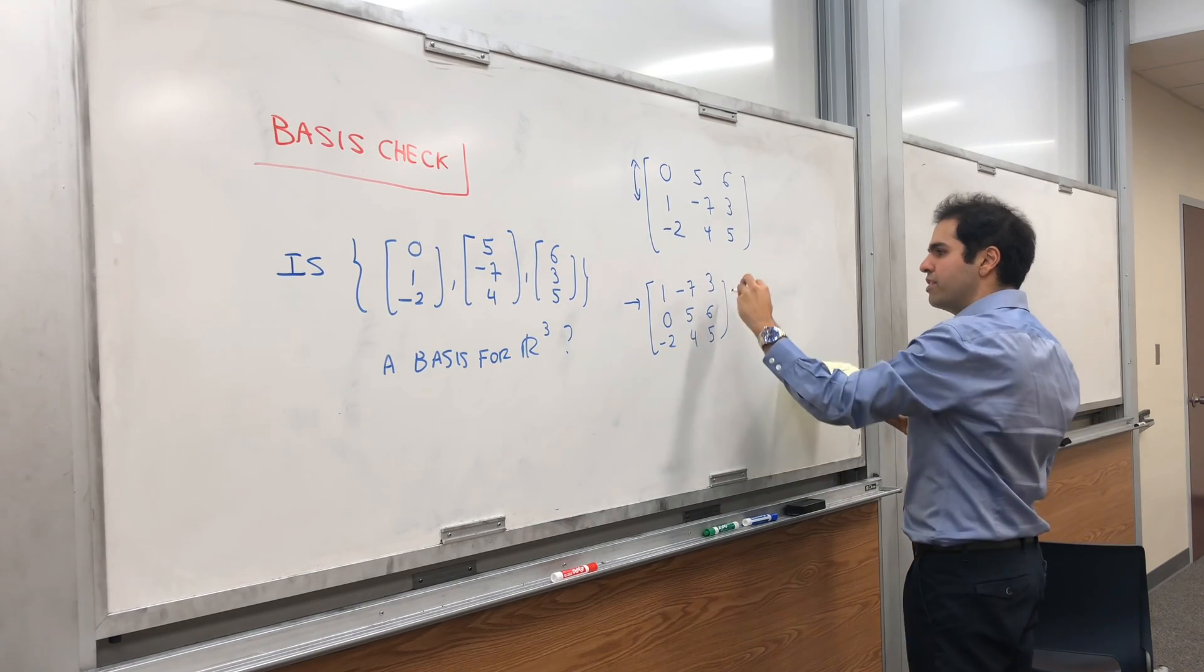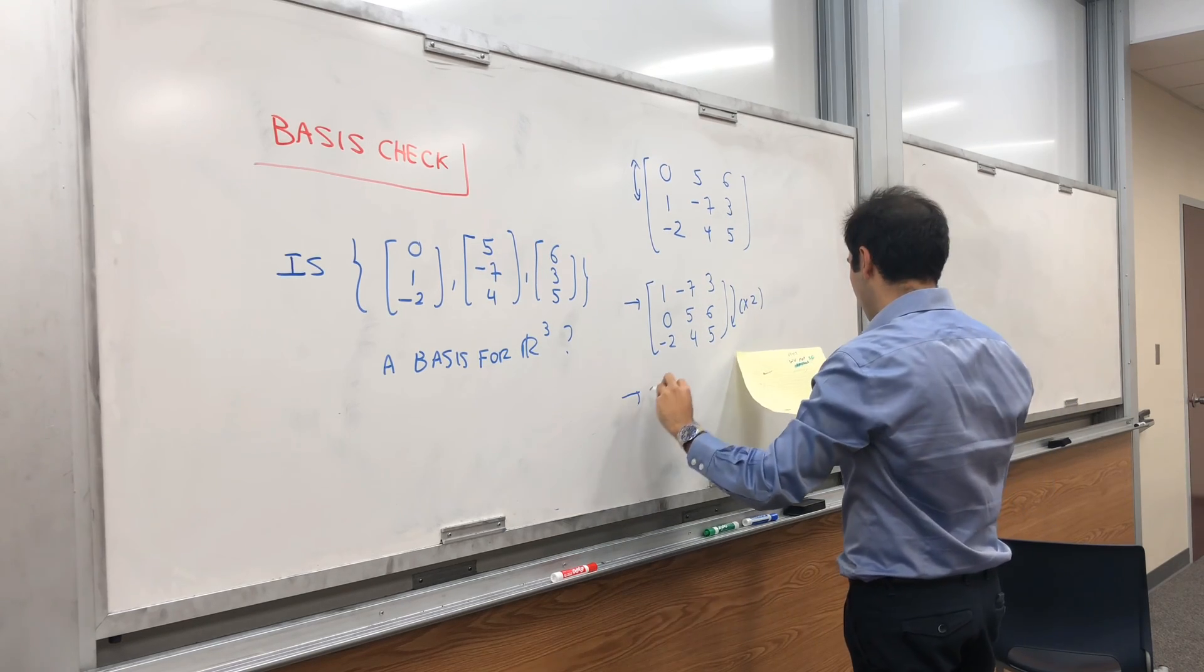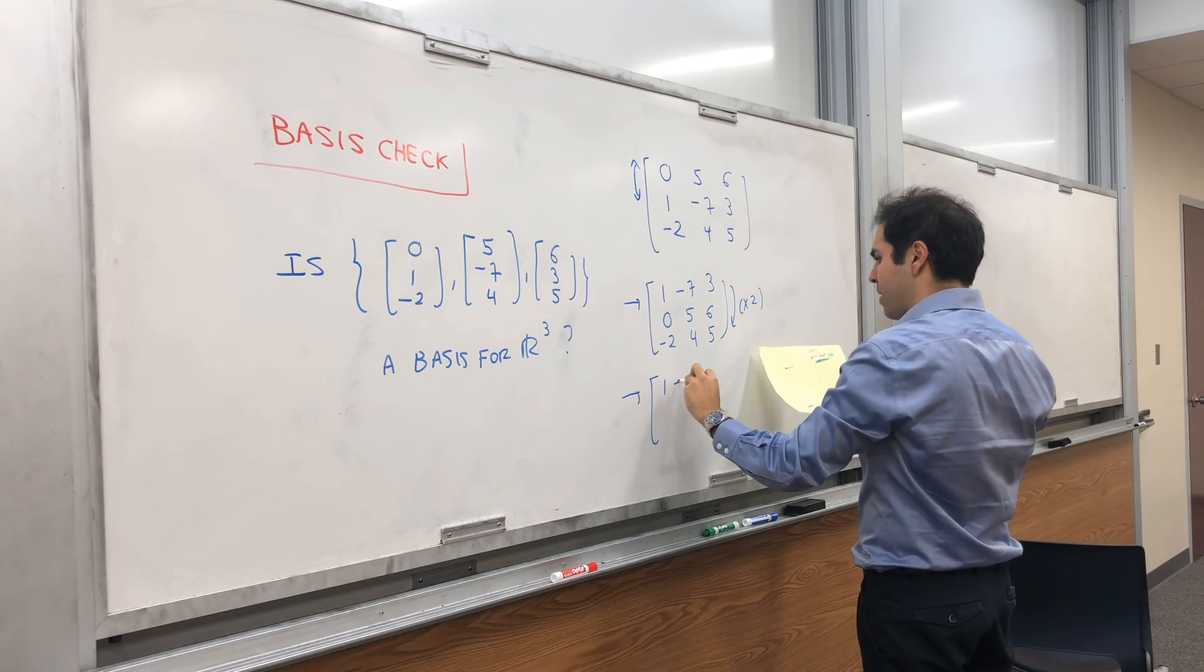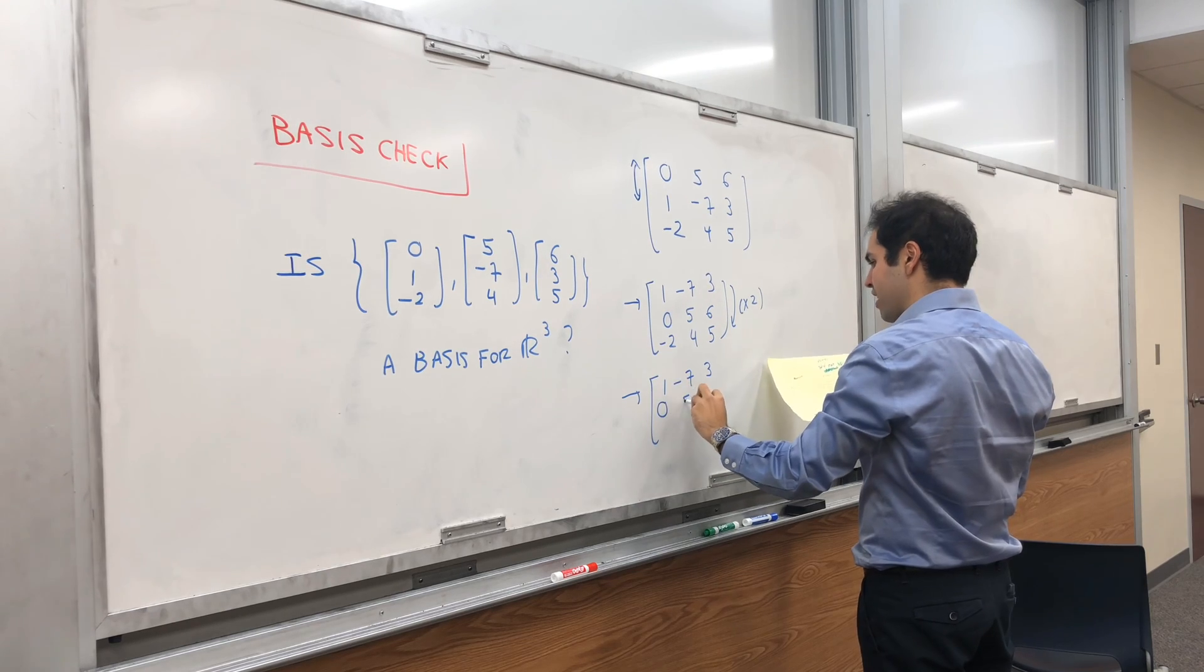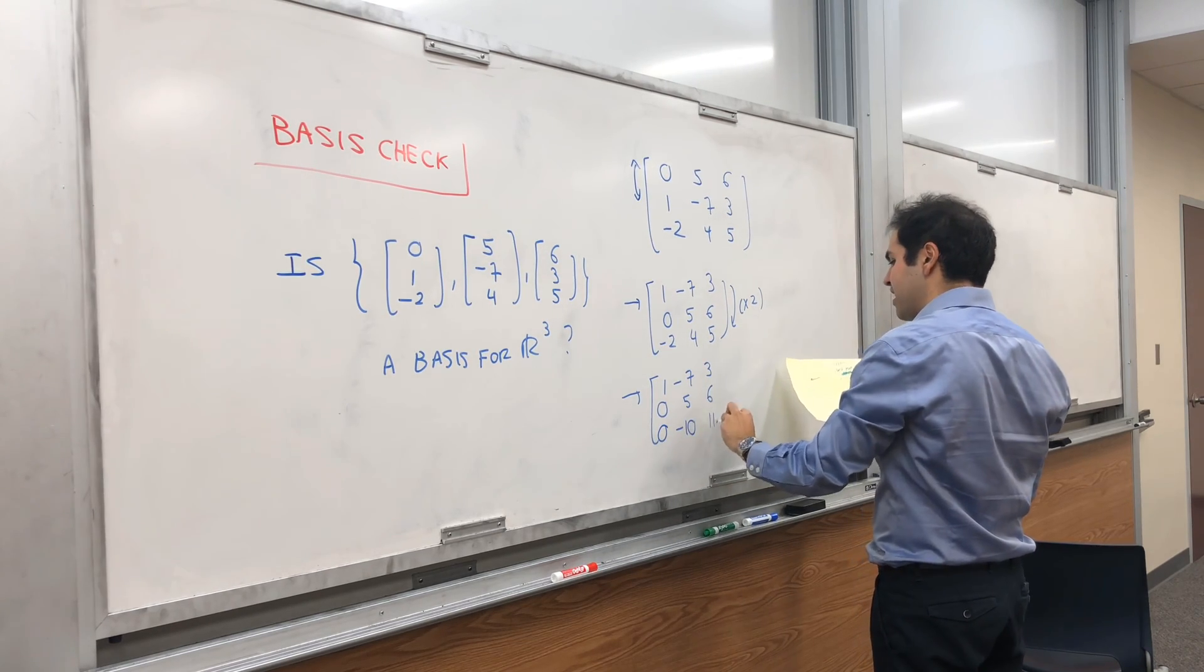Okay, now get rid of this minus 2, so multiply this by 2. And you get 1, minus 7, 3, 0, 5, 6, and then 0, minus 10, and 11.